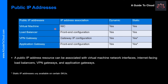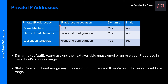A public IP address resource can be associated with a virtual machine network interface, internet-facing load balancers, VPN gateways, and application gateways. For VPN gateways and application gateways, static IP addresses are available only on certain SKUs. A private IP address resource can be associated with a virtual machine network interface, internal load balancers, and application gateways.